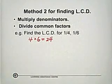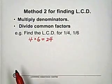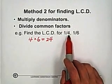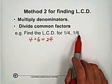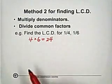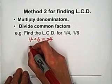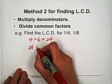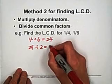The second step, divide common factors. So 4 and 6, they're both even numbers. So the common factor with 4 and 6 is 2. So 24 divided by 2 equals 12.